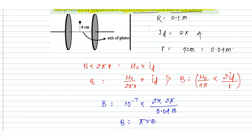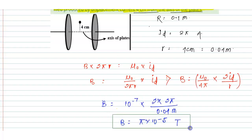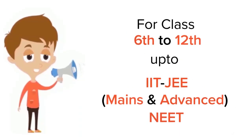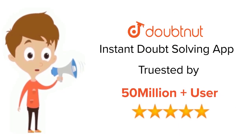When we solve, we get B equal to π times 10 to the power minus 5. The unit of magnetic field is tesla. So the magnetic field is equal to π × 10⁻⁵ tesla. This is the correct answer to this question. Thank you.